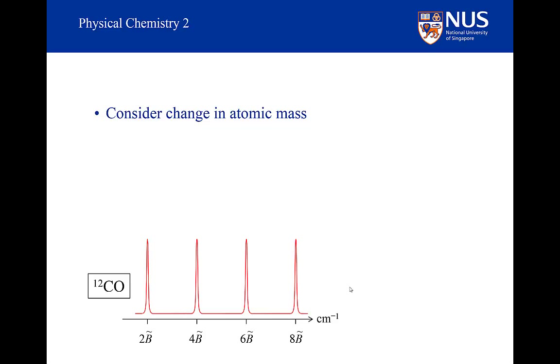So if this is the spectrum of carbon-12 monoxide, my spectrum for carbon-13 monoxide will be different. In fact, the lines will be slightly closer together, and the reason why is that the reduced mass for carbon-13 monoxide is larger.